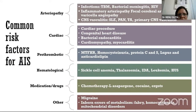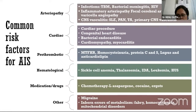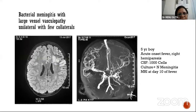Coming to risk factors of arterial ischemic stroke in pediatrics: the most common category is arteriopathies, followed by cardiac causes, prothrombotic states, hematological disorders, drugs or medications, and others. In ischemic stroke, these are not exclusive diagnoses — one patient can have several risk factors present together. For example, arteriopathy can present along with a hematological disorder or prothrombotic state. So we need to think that several risk factors can be present together.